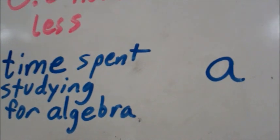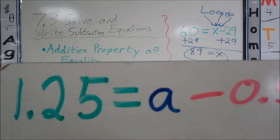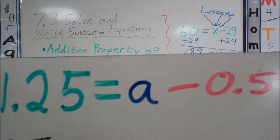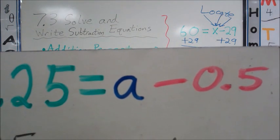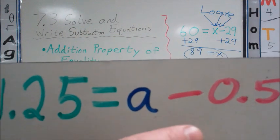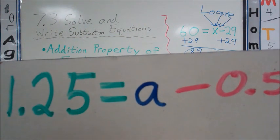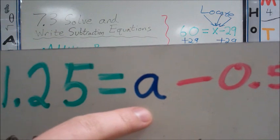Finally, we're going to write our equation: 1.25 equals a minus 0.5. If we're subtracting 0.5, we need to add 0.5 to each side to isolate our variable a.